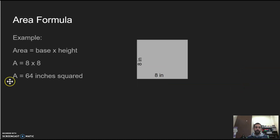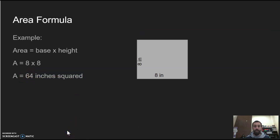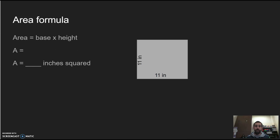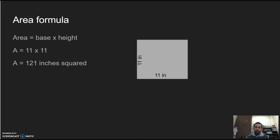Let's give it a shot. For this square, the base is 8 and the height is 8, so we do base times height: 8 × 8 = 64 inches squared. Notice it says inches squared, not just inches — make sure you label correctly. Now your turn: the base is 11 and the height is 11. Congratulations — 121 inches squared! If you used your multiplication chart, that is perfectly fine because you're using the tools provided for you.